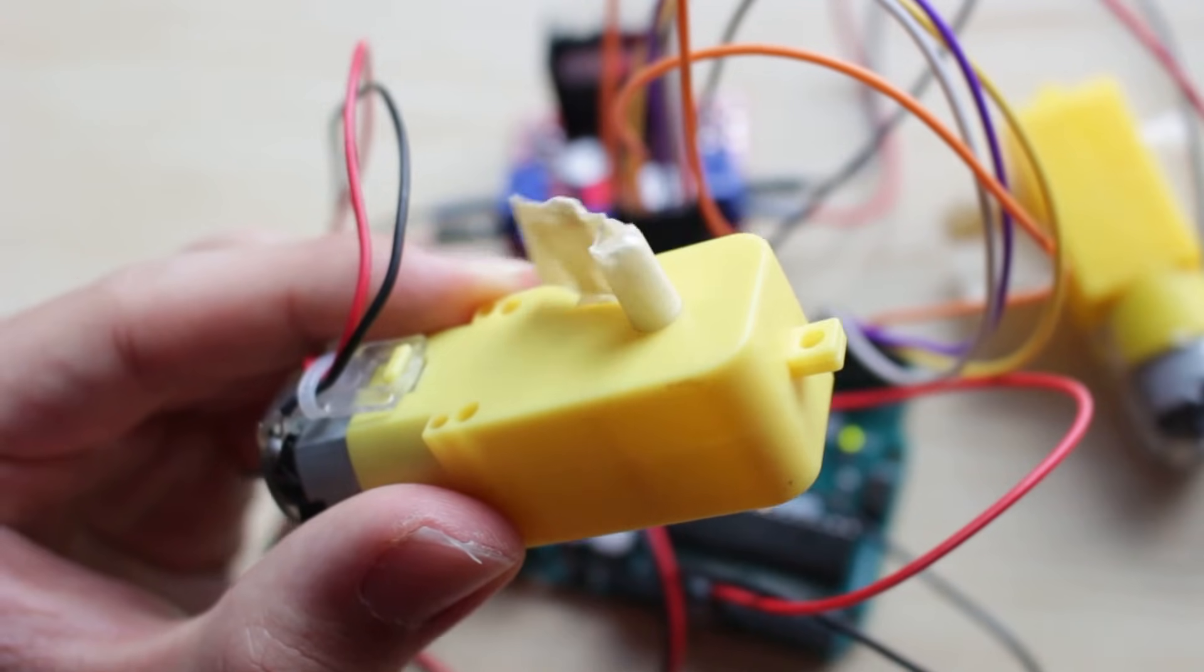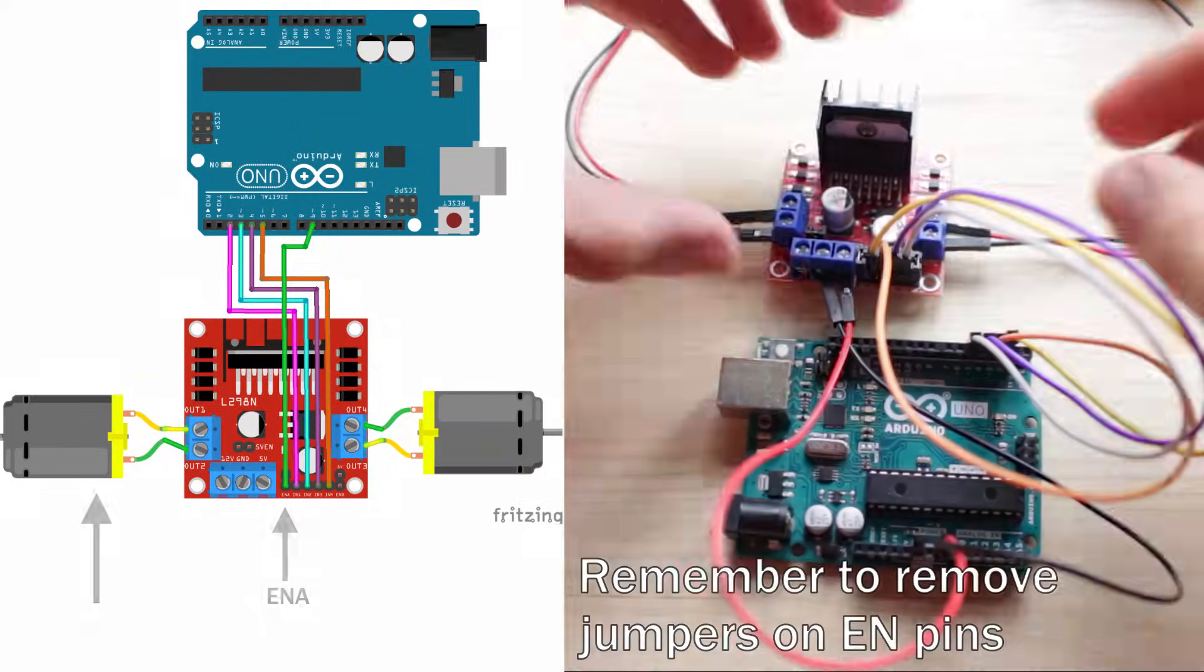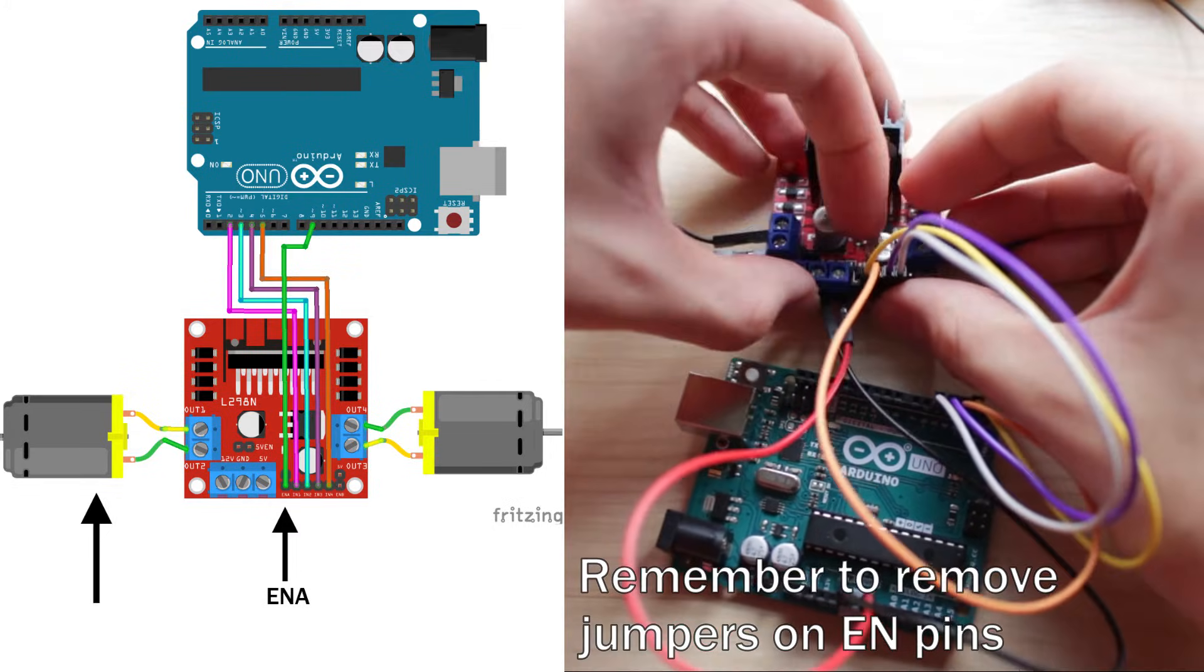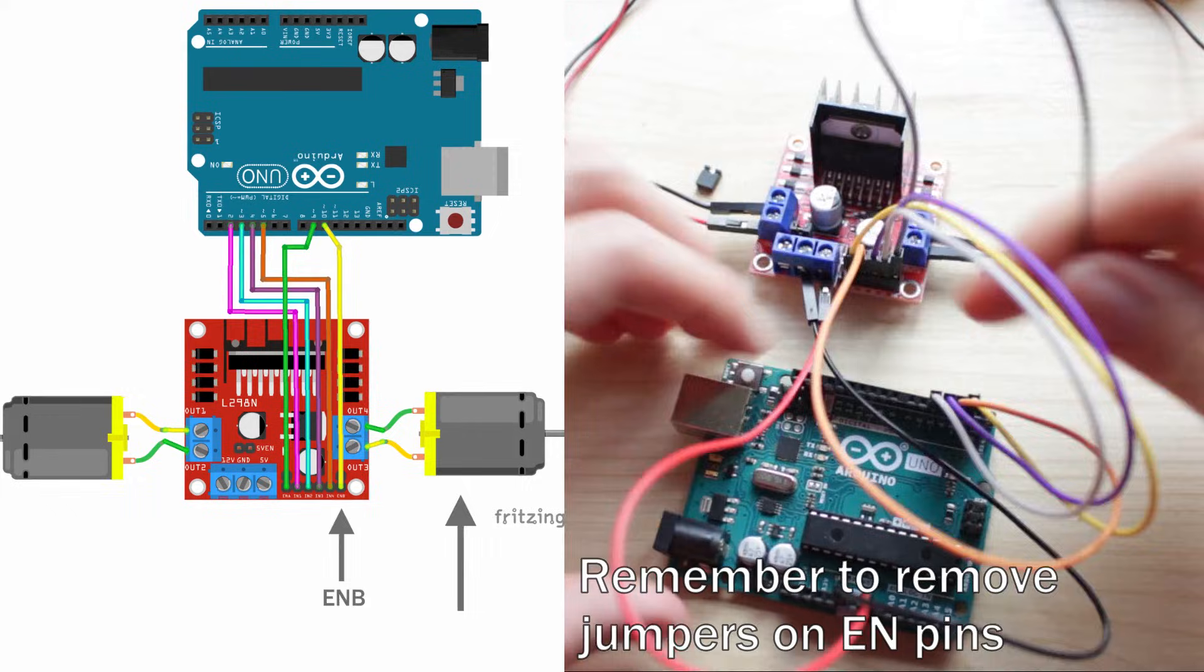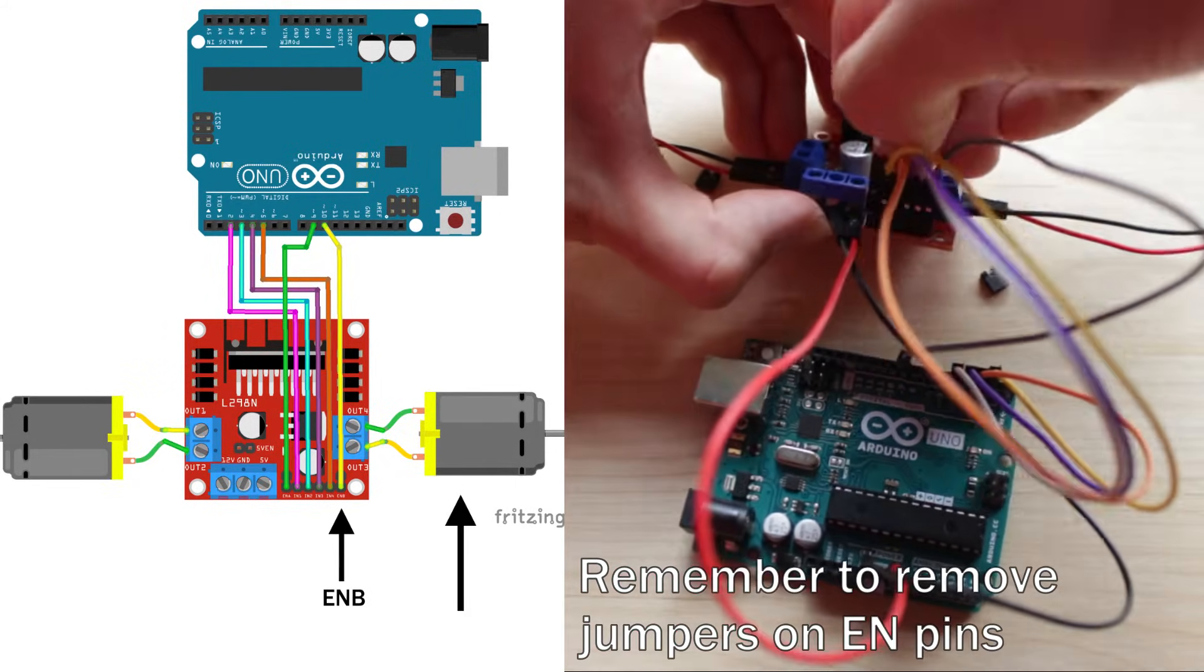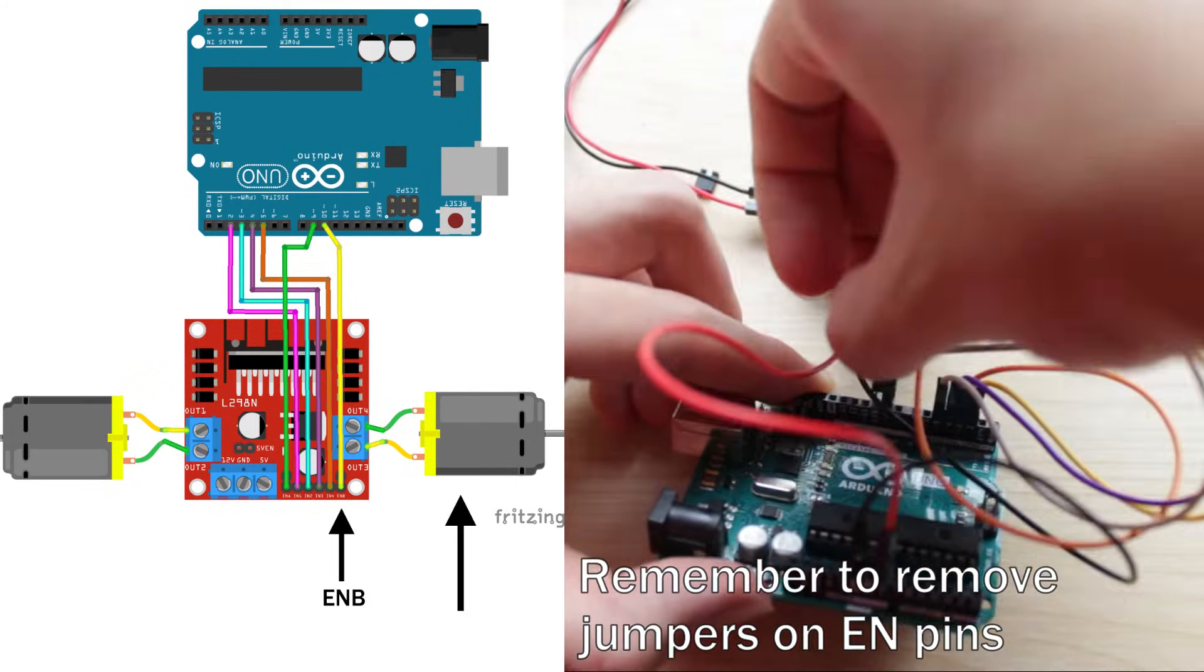You can also control the speed with PWM. The ENA pin on the motor controller controls the speed on this motor and I'll connect it to pin 9 which is a PWM pin. The ENB pin controls the speed of this motor and I'll connect it to pin 10 which is also a PWM pin.